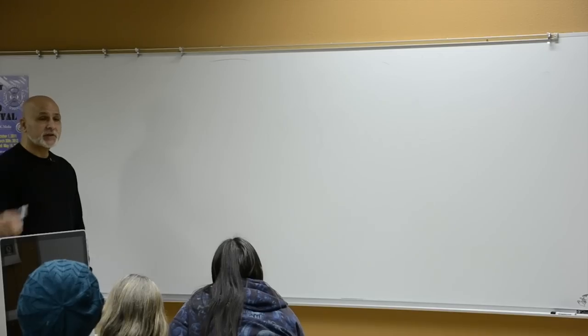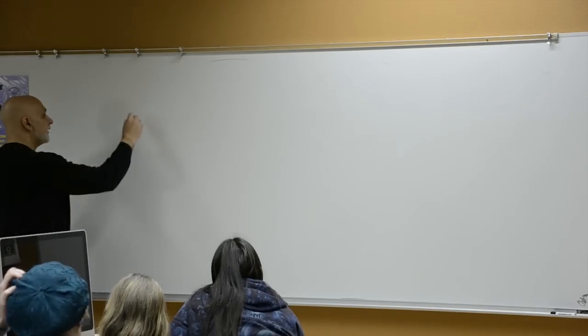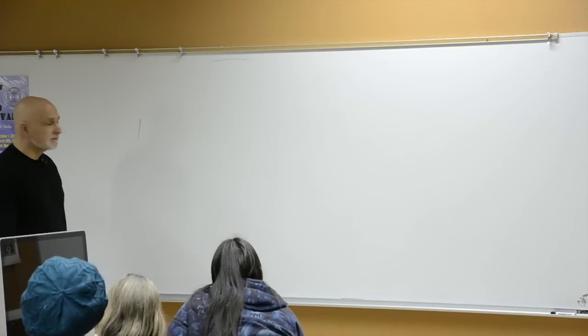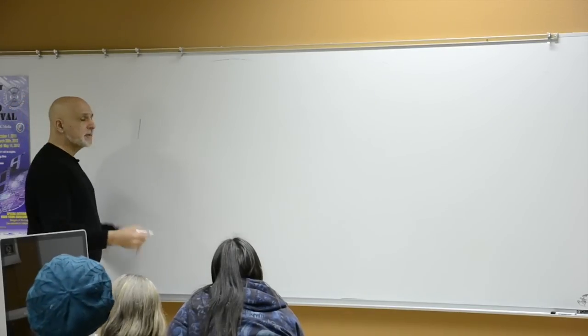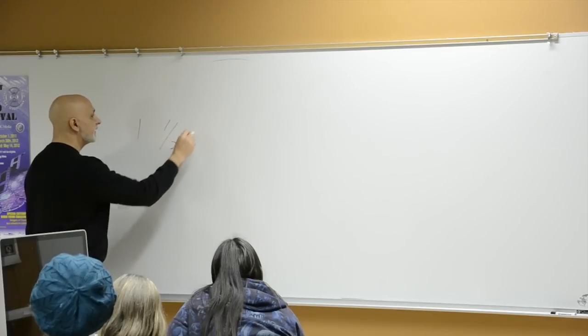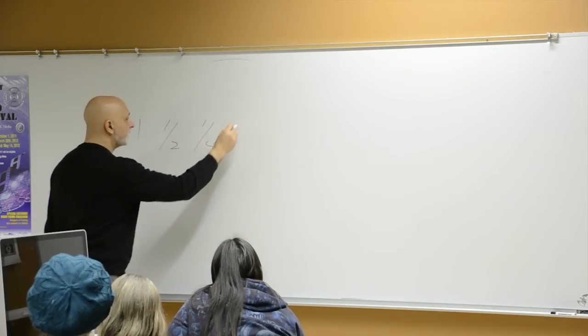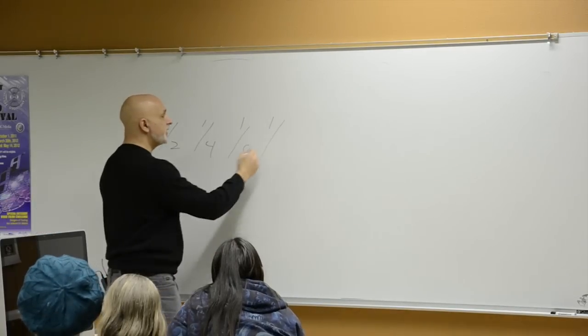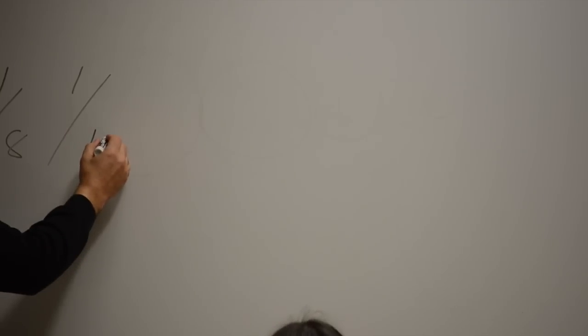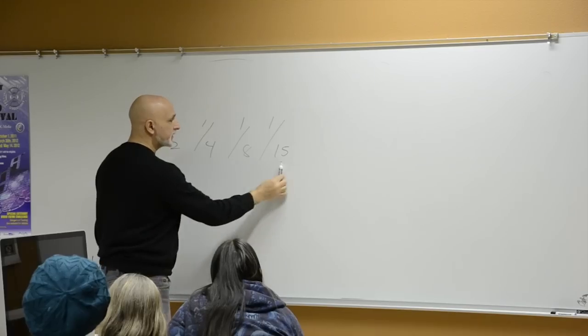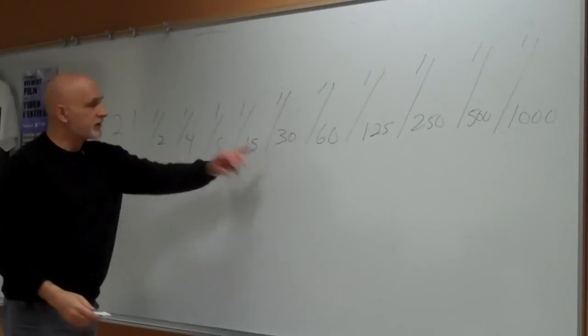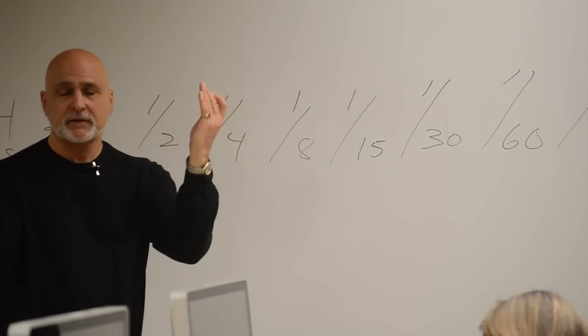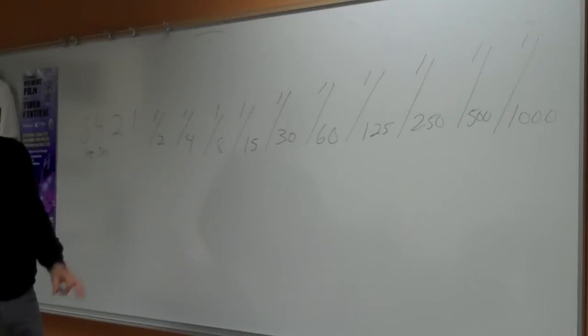Now shutter speed. They're just as easy as far as the math. Start with one second. Half as much light as a half a second. A quarter of a second. An eighth of a second. Guess what they did? They wanted it to be easy for you. They changed it from 16 to 15. From here to here is one stop. This lets in less light. Fractions of a second. How long your shutter is open and close. That's all it is.